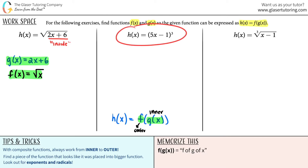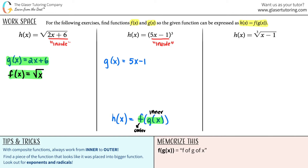For the next one, h of x equals the quantity 5x minus 1 raised to the third power. Is there anything trapped inside, maybe by a parenthesis? Yes — the 5x minus 1 is all trapped inside those parentheses, so that's the inner function. g of x equals 5x minus 1. To find the outer function, rewrite the whole thing, erase the inner function, and just put an x there. The whole thing was 5x minus 1 raised to the third, so f of x equals x cubed.